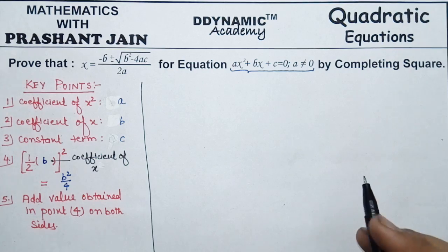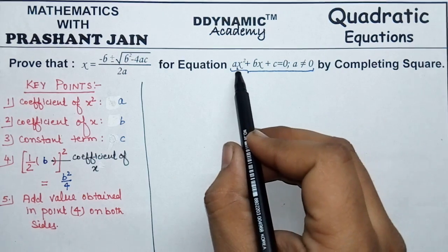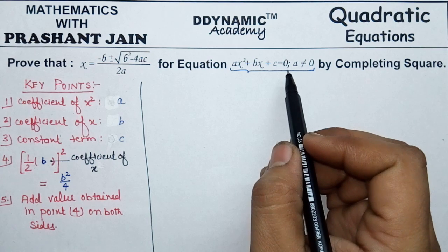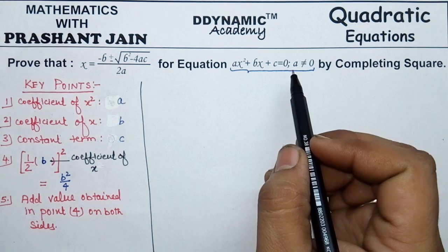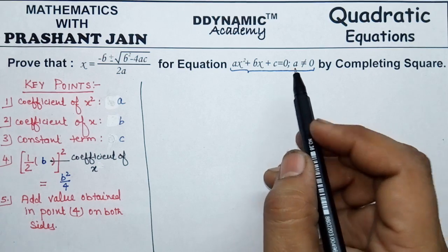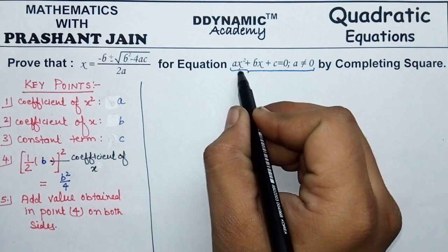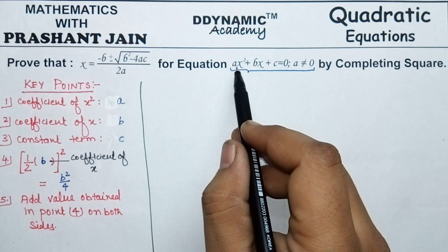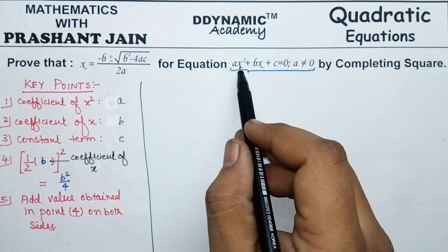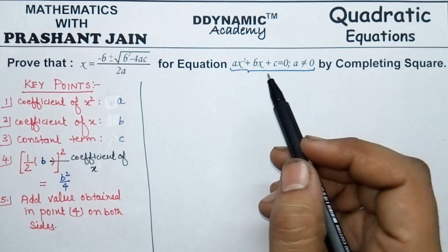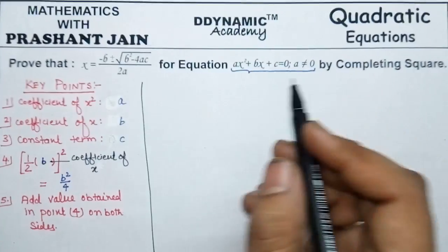Now we start. The equation is ax² + bx + c = 0. We solve it by the method of completing the square. The mandatory requirement is that the coefficient of x² must be unity. Here the coefficient of x² is a, not one, so we need to make it one.